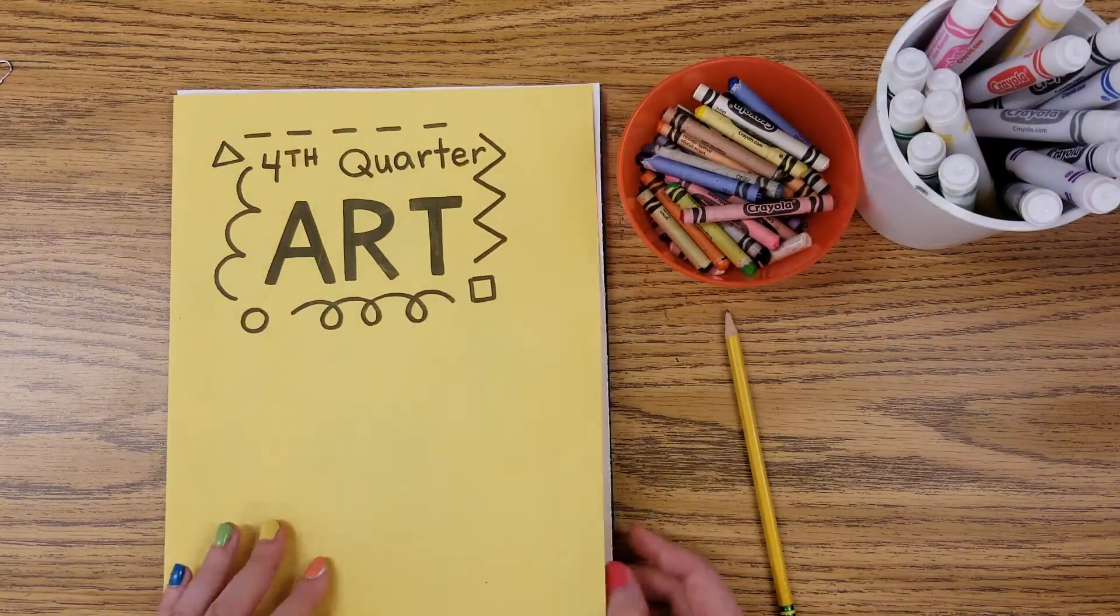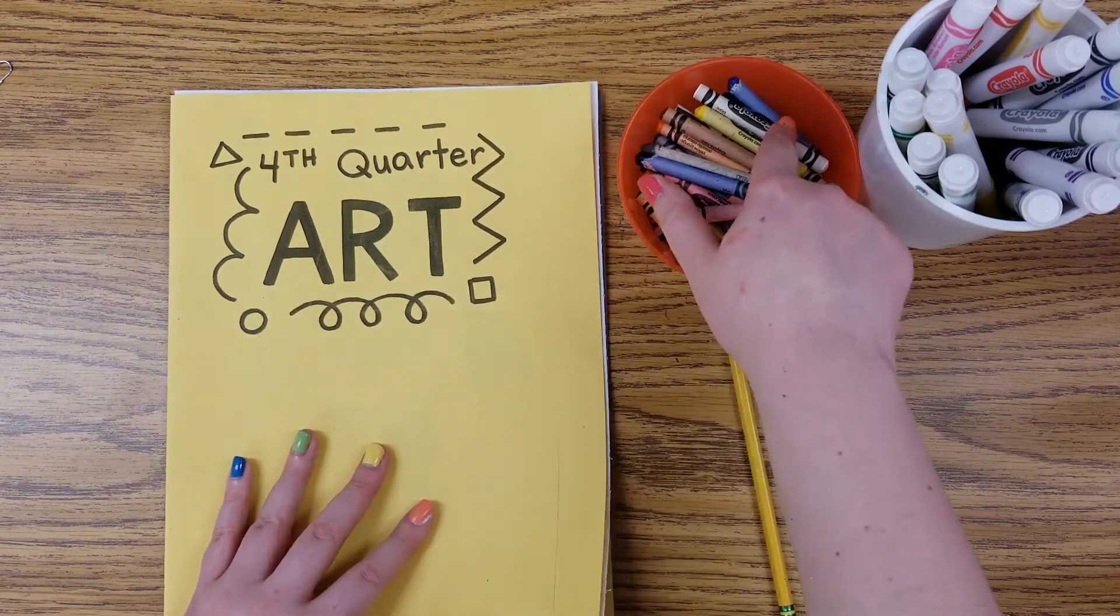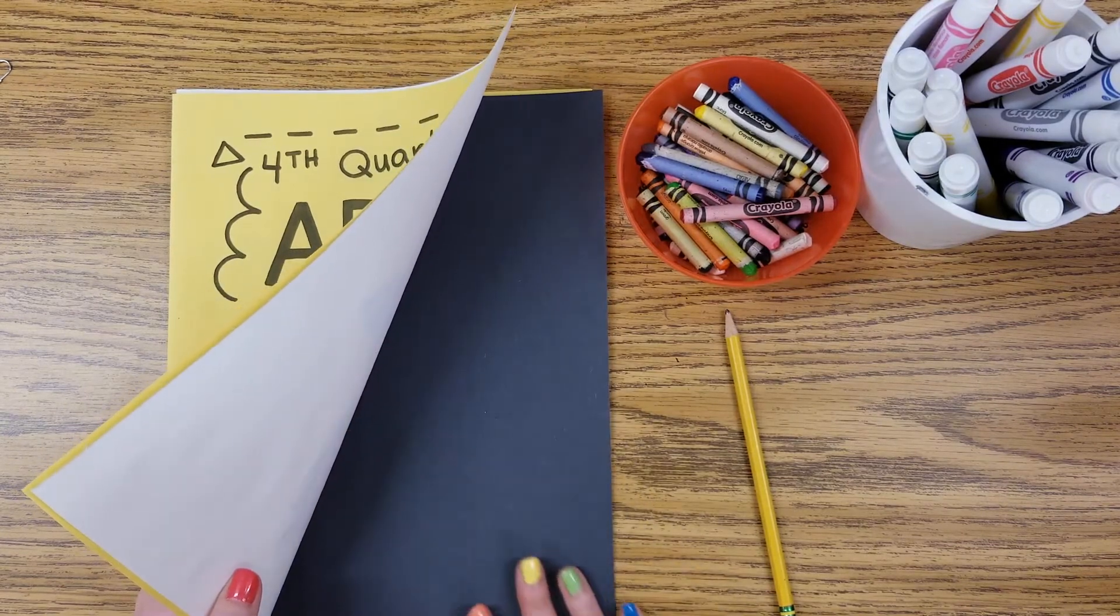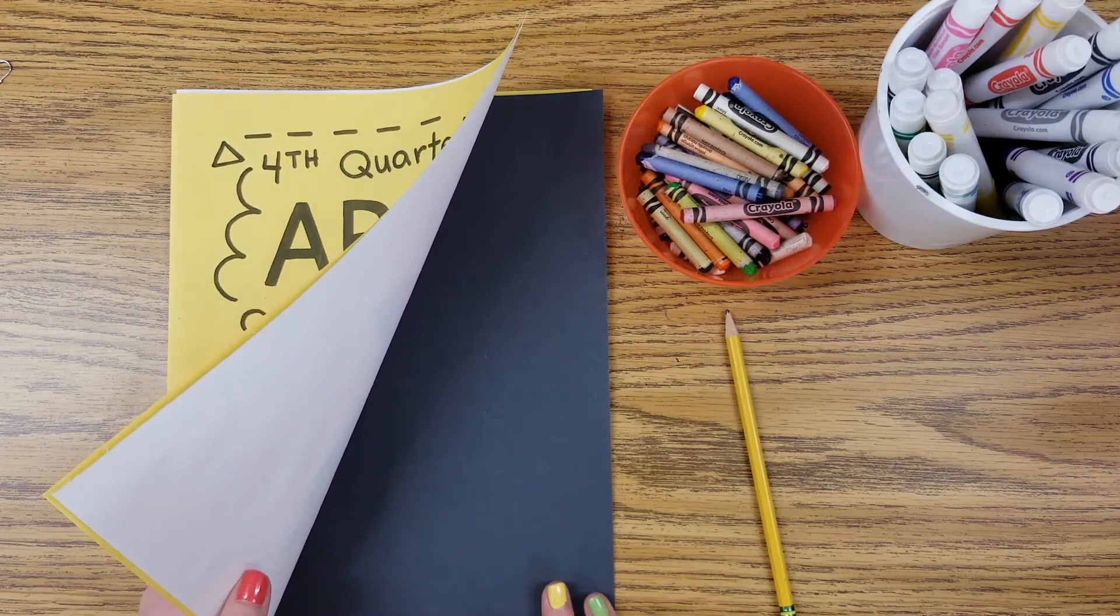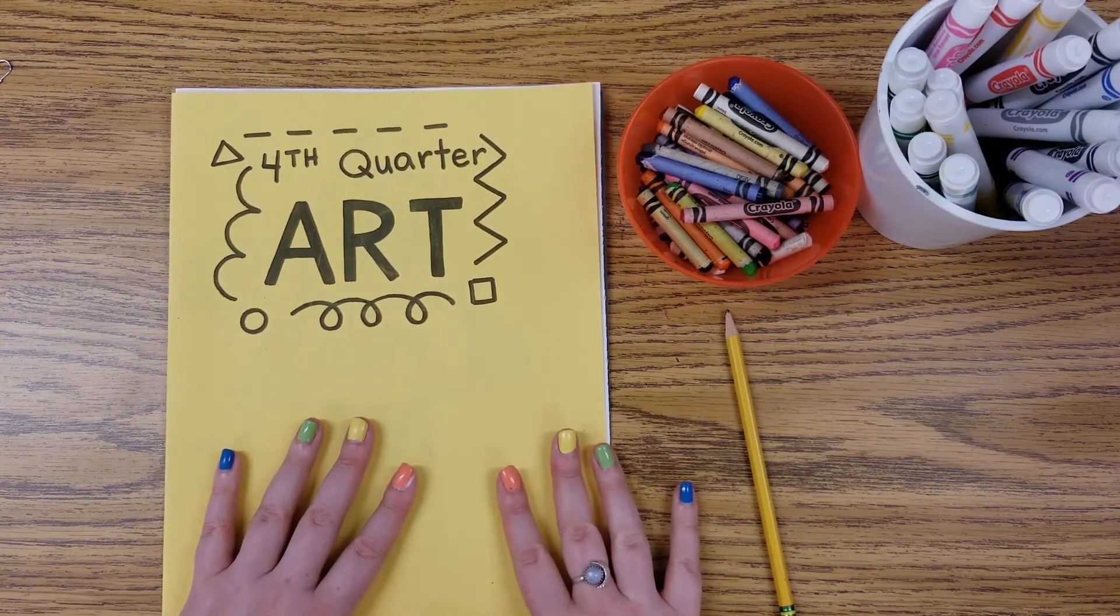Next week we'll go ahead and get out our scissors and glue. We'll even make sure that we have something white like a white crayon to add some stars and space to our black paper friends. For today though, I will go ahead and save my work. And as always, have fun creating my friends.